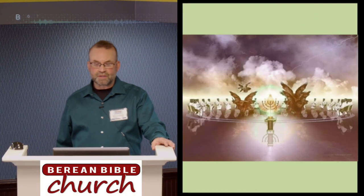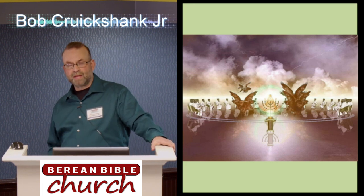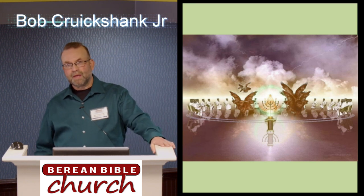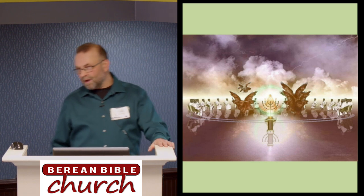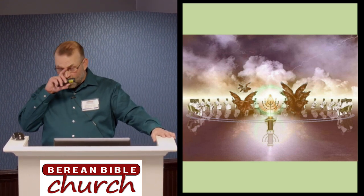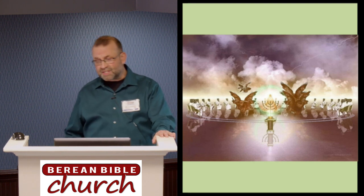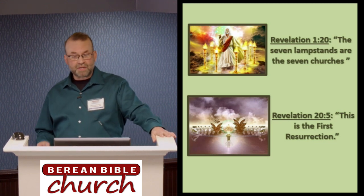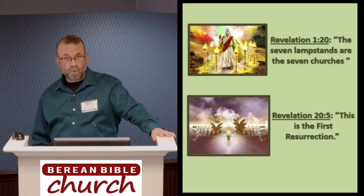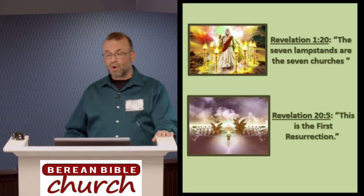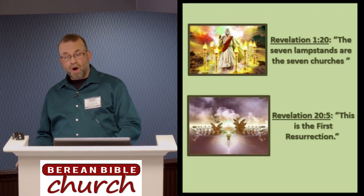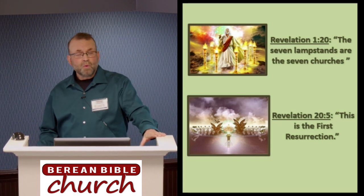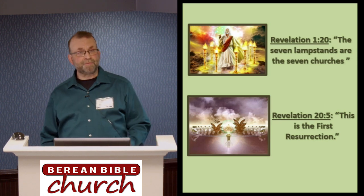The first resurrection. Revelation 20, verse 4 is the vision John sees of the first resurrection. Like everything else in Revelation, John's not seeing the actual events here. What he's seeing are images and symbols that represent those events. This image is not unlike the image of the seven lampstands in chapter 1. We are immediately told what those lampstands represent — they are the seven churches. In like manner, in Revelation 20, we are told, point blank, this is the first resurrection.